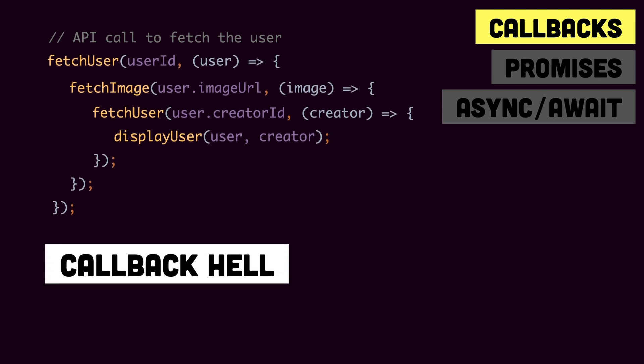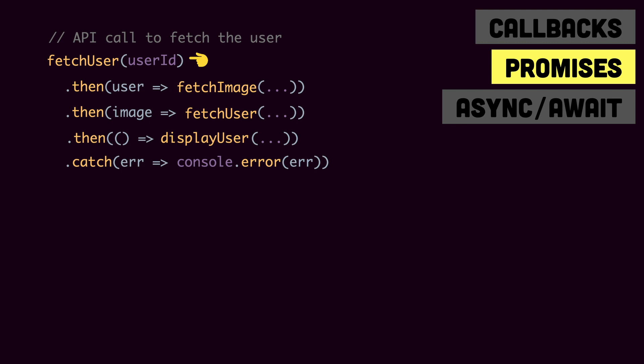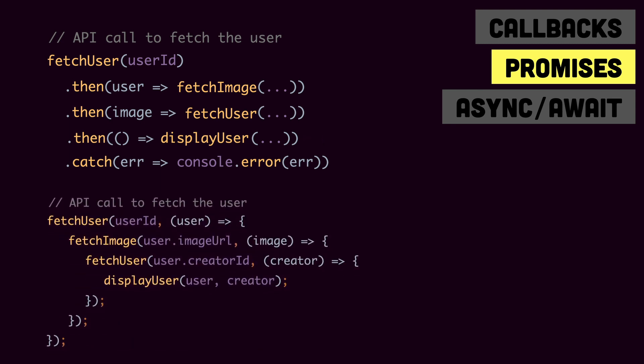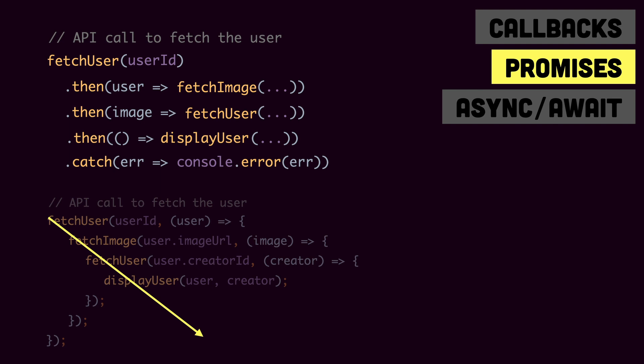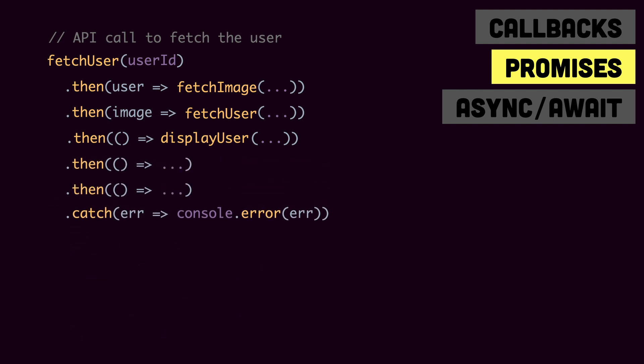To improve on callbacks, ES6 came with promises. We could write the same function in the form of callbacks like this — fetchUser returns a promise, then we fetch the image, then we fetch the creator, and after that we display the user. Comparing the promise version with the callback version: in callbacks we had deep nesting, but in the promise version we have nice chaining of functions, and whenever we need to add more functionality we just add .then().